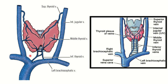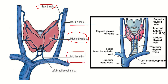So to summarize: the superior thyroid vein drains into the internal jugular vein, the middle thyroid vein also drains into the internal jugular vein, and the inferior thyroid vein drains into the brachiocephalic vein. The second picture confirms the same — the superior and middle thyroid veins drain into the internal jugular, while the inferior thyroid vein drains into the brachiocephalic vein.